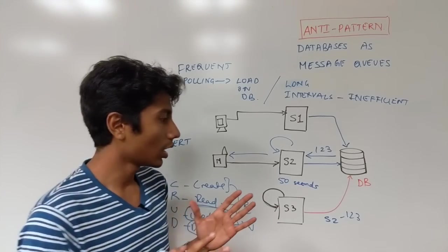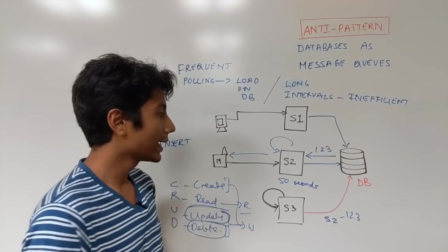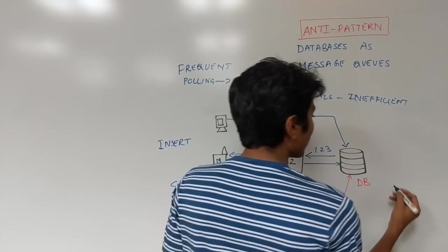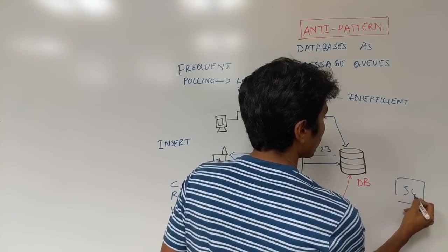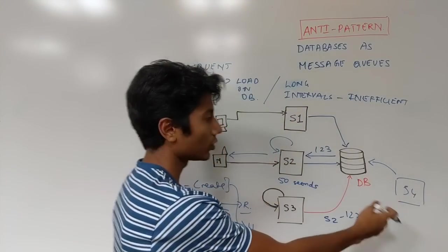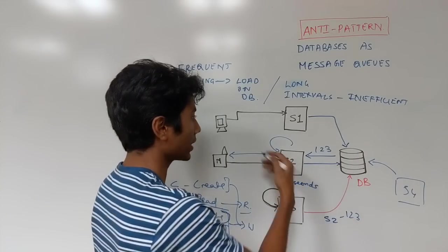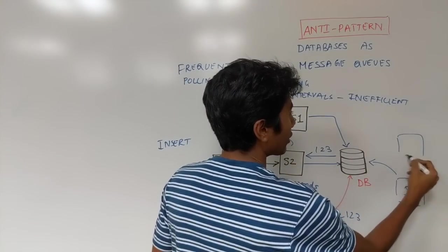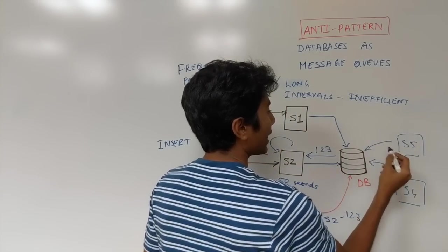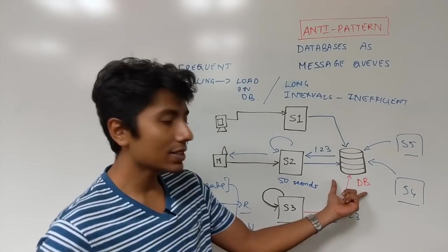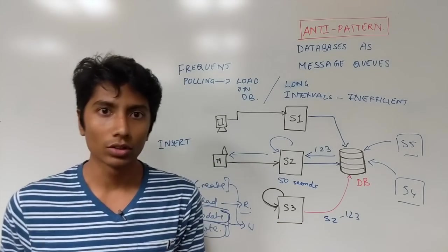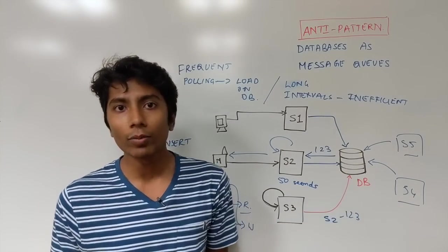The final issue, which is a very big issue for large systems, is scalability. So if I have a new server, S4, and I start asking the database for messages sent by other servers and then S5 and S6 and so on and so forth, this database is going to be unable to handle that load. It cannot perform so many read operations.